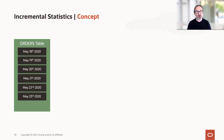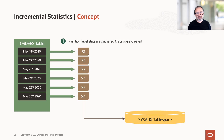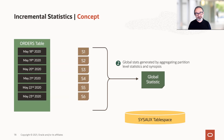The concept: we see here an orders table with a few partitions. When we have incremental statistics on and we create new statistics, for each partition we store partition-level stats. But in addition, we also take note — this is called the synopsis — in the SysAux tablespace. With the partition-level stats and the synopsis, we can now calculate the global statistics for the table.